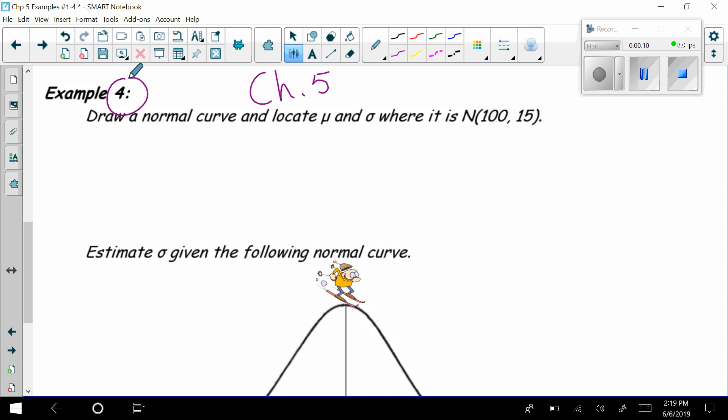And here we have, it says draw a normal curve and locate mu and sigma where it is N(100, 15). Of course, you should know at this point that this is not some kind of ordered pair. This is mu, this is sigma, which means here we draw a normal curve. We do our best. It doesn't have to be super pretty. We know right down the middle is mu, which it says is 100. So we can put 100 here.